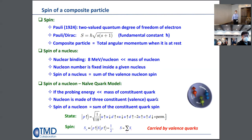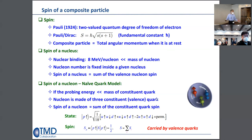In the naive quark model, if the probing energy is much less than the mass of the constituent quark, the nucleon is made of three constituent valence quarks, and the spin of the nucleon is the sum of all constituent quark spins. In that picture, you define the state and the spin operator sandwiched between the state gives spin-1/2. This was believed for many years, but now we understand it is not the full picture.